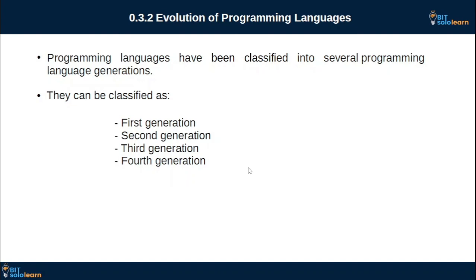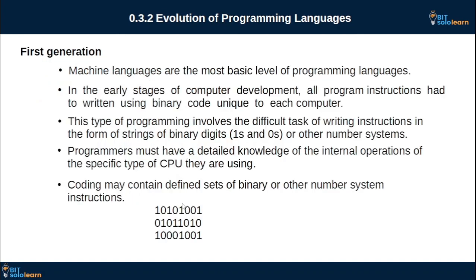This is the programming language evolution. This is the generation of programming language. This is the generation of programming languages. We use the binary code. This is the word 0 and 1 — this is an example of our programming.